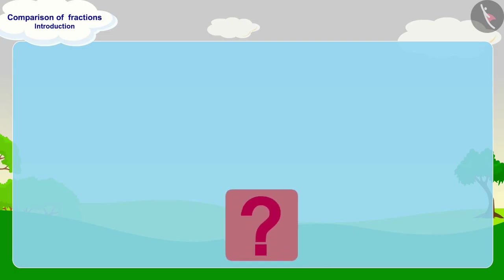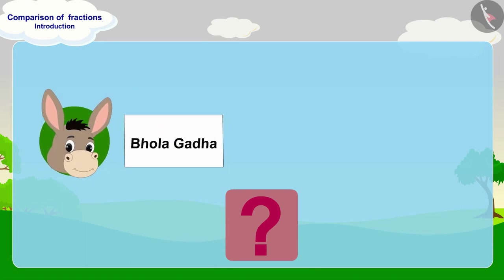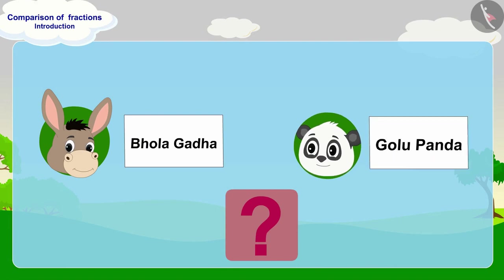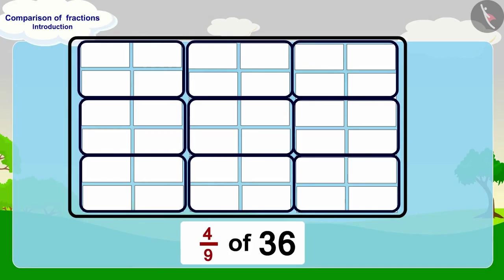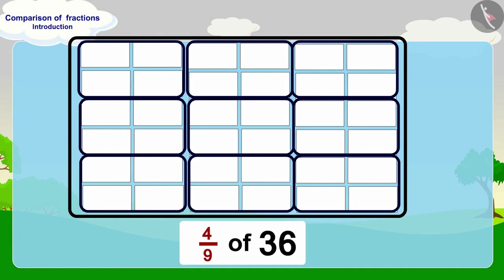Children, can you tell how many pieces of paper Bhoala has written his name on? Are these more or less than the pieces of paper on which Golu has written his name? You may find the answer by pausing the video. Well done children, you have found the right answer. Bhoala has written his name on four ninth parts of 36.